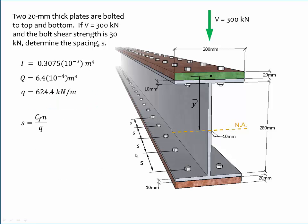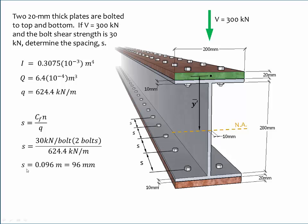Now we can calculate the fastener spacing using the spacing equation. C-sub-F, the fastener capacity in shear, is 30 kilonewtons per bolt. N is the number of bolts passing through the A-prime area — there are two bolts, so N equals 2. Lowercase q is 624.4 kilonewtons per meter. We calculate the spacing S to be 0.096 meters, which is 96 millimeters.